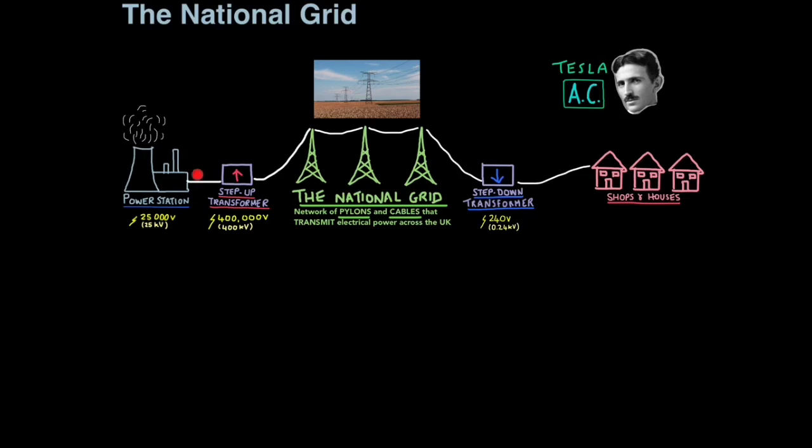You have your power station which generates your electrical power. Then the electrical power reaches a device called a step up transformer. This boosts the voltage significantly. You can see here we're going from 25,000 volts to 400,000 volts. Now the electrons have enough energy to travel long distances. Next we actually enter the national grid, that network of pylons and cables.